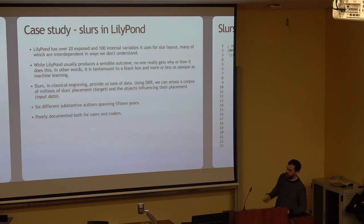Using OCR, we can amass a corpus of millions of slurs placements, the target, where it is physically on the page. And even more importantly, the objects influencing their placement, input data. Here, we're encoding a little bit of bias. My assumption is that where note heads are influences where a slur is. There's certain objects on the page that influence where a slur is, whereas there's certain objects that don't. Then, in LilyPond, six different substantive authors, including myself and Han Wen, spending 15 years, most of whom I've never met, let alone talked to each other. And it's poorly documented for both users and coders. This is another place where machine learning can make sense, if there's been a lot of organic growth in software.